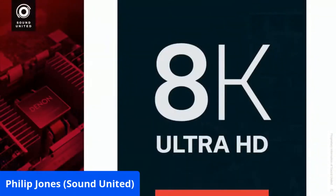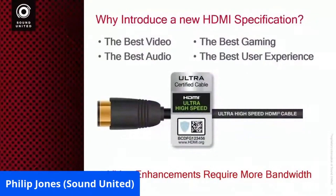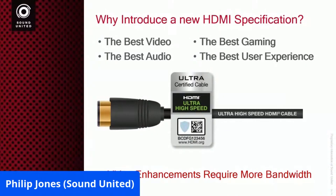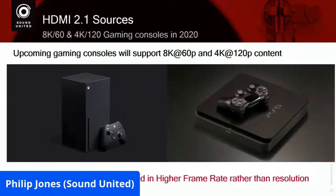I want to cover HDMI 2.1, because there are a few things I didn't talk about last time. So we know there's a new standard, and the standard is basically because of the bandwidth requirements. A lot of the audio stuff, gaming stuff, and user experience stuff could have been done with a minimal increase in bandwidth. It's just that when you add 8K content and 120 frames per second to run these game systems, the bandwidth is massive.